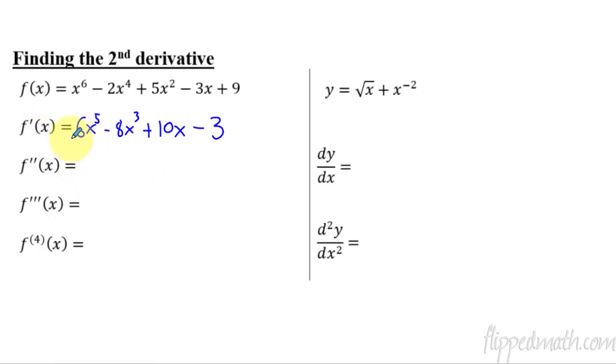The second derivative is just taking the derivative of the first derivative. It's that simple. The derivative of the first derivative gives you the second derivative. So we'll just do the same thing again. 30x to the fourth minus 24x squared plus 10, and the derivative of a constant is zero. And then here let's do the third derivative. We just take the derivative of the second. So 30 times 4, 120x cubed minus 48x, and then the derivative of 10 is just zero.